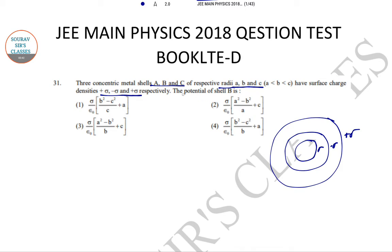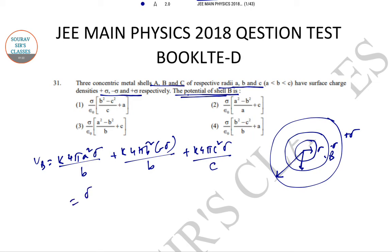The potential of shell B we need to find out. So potential VB equals K 4π a² sigma by b plus K 4π b² minus sigma, and the last one is K 4π c² into plus sigma by c. Sigma by ε₀ we can take on, so a² minus b² by b plus c. Hence the answer to the question is option number 3.